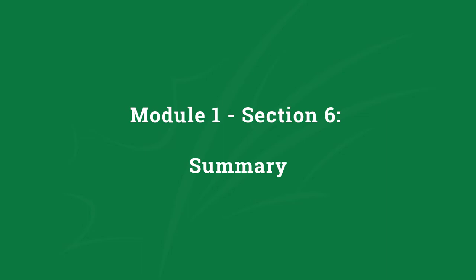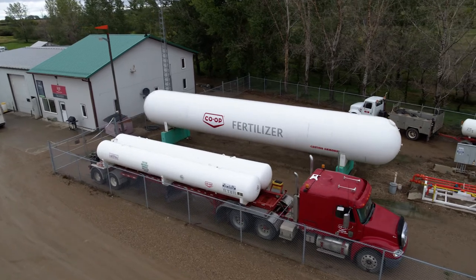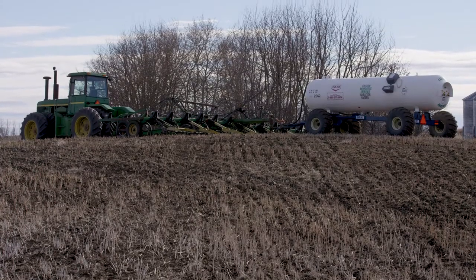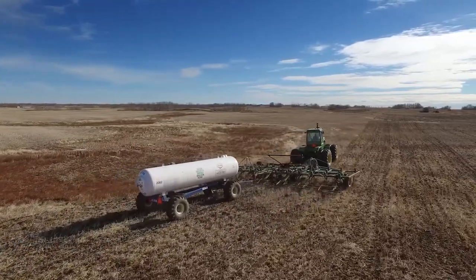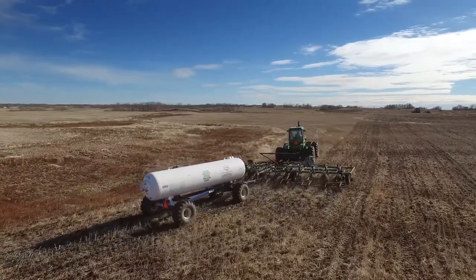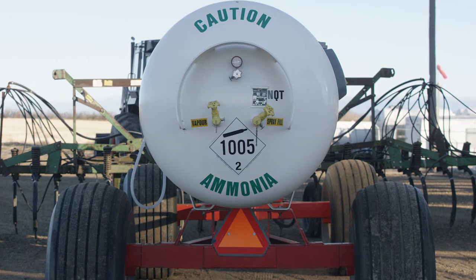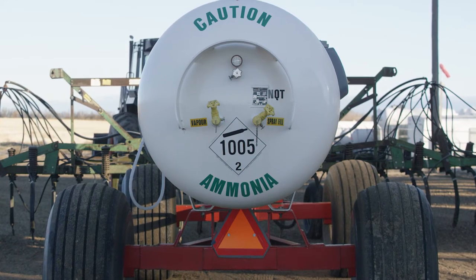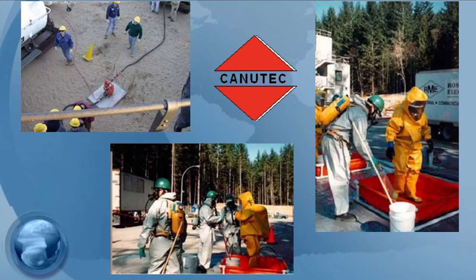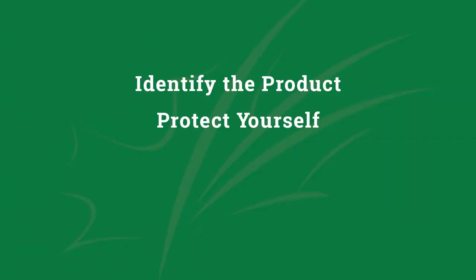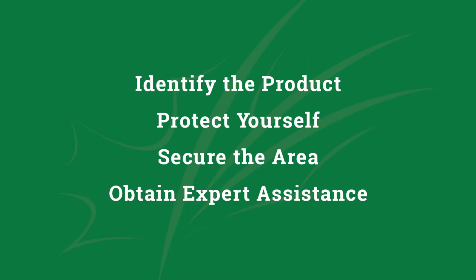Anhydrous ammonia is a commonly used agricultural fertilizer and industrial chemical. In small concentrations it's not harmful, but in high concentrations it can cause injury and lead to death. Anhydrous ammonia is stored and transported under pressure as a liquid, but expands to a gas on release. The main hazard of an anhydrous ammonia release is inhalation. Rescue and leak mitigation must be left to properly trained and equipped personnel who can be summoned by activating the ERAP associated with the transport vessel or fixed facility. Remember to focus on correctly identifying the product, protecting yourself, securing the area, and obtaining expert assistance.